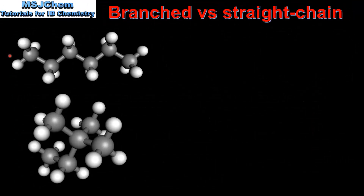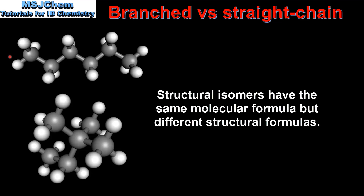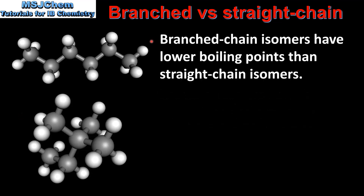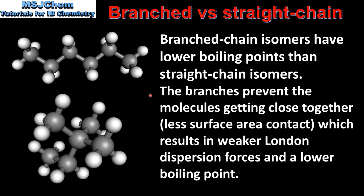The next factor is branched vs straight chain isomers. Here we can see two structural isomers of C6H14. At the top we have hexane, which is a straight chain isomer, and at the bottom we have 2,2-dimethylbutane, which is a branched chain isomer. The straight chain isomer has a boiling point of approximately 70°C, while the branched chain isomer has a boiling point of approximately 50°C. The reason is that the branches prevent molecules getting close together, meaning there is less surface area contact between the molecules, resulting in weaker London dispersion forces.